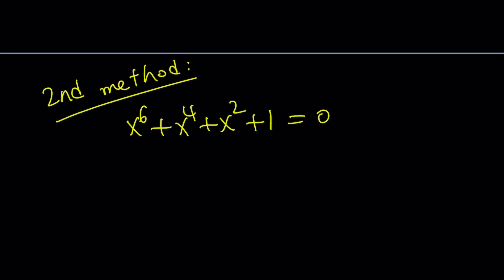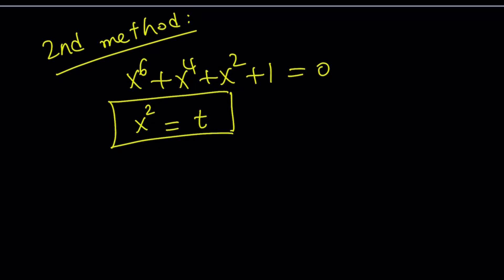And we're just going to copy our work from the first method. So in the second method, I'd like to use substitution because these are even powers. And that basically calls for x^2 = something. How about t? I like t better.